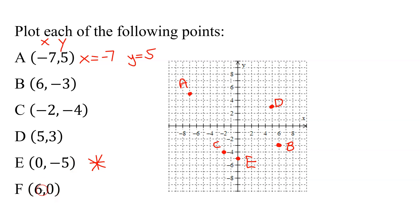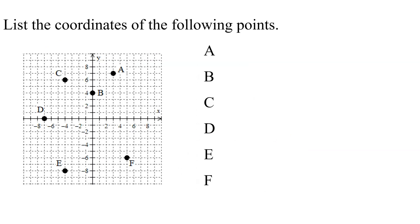F is 6, 0, so x is 6, y is 0, so I'm going to go 6 to the right, nowhere in up or down, so there is my point F. Now you know how to plot points, let's do everything in reverse.